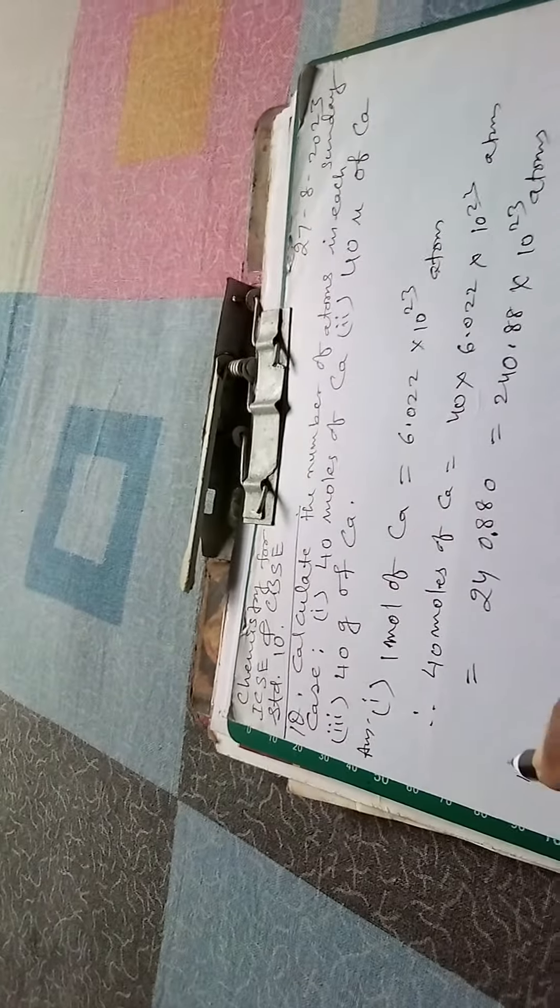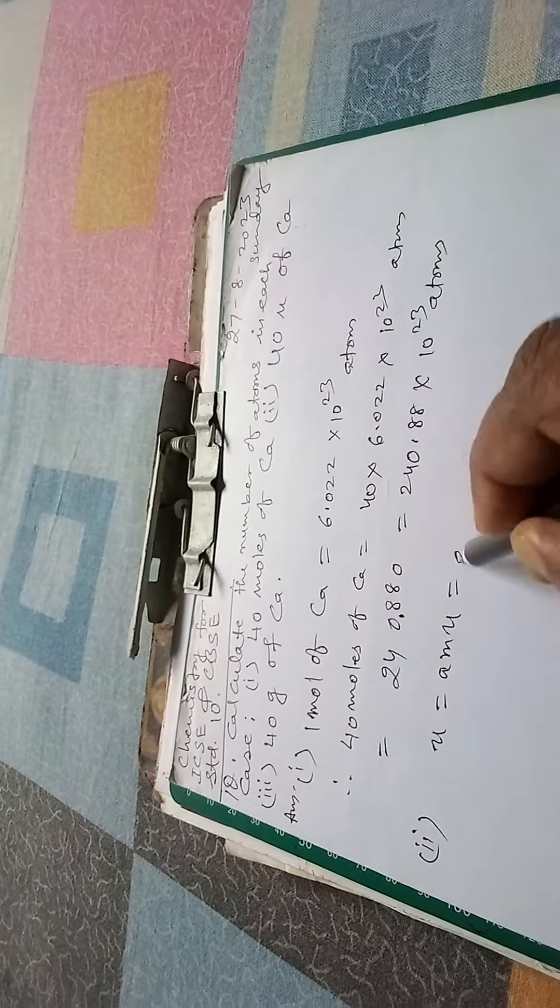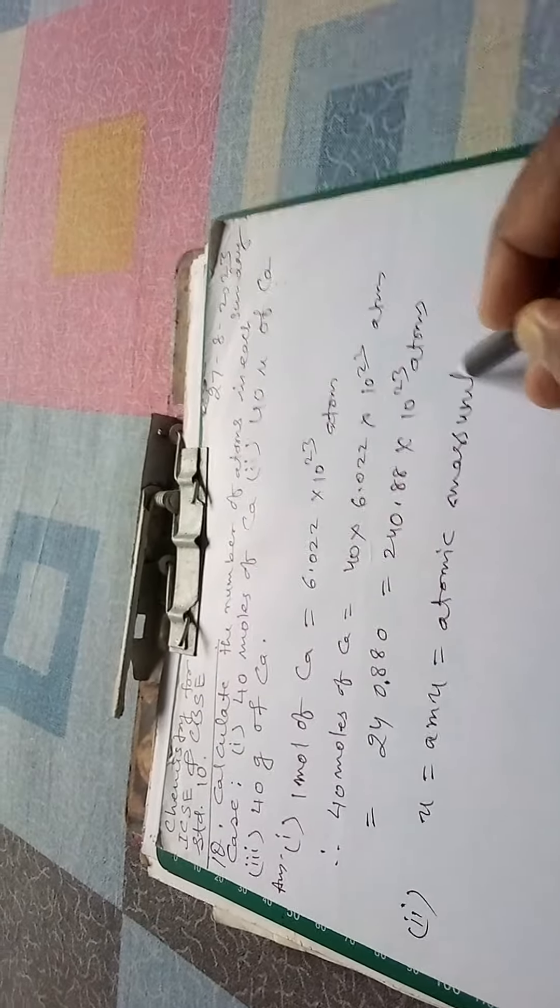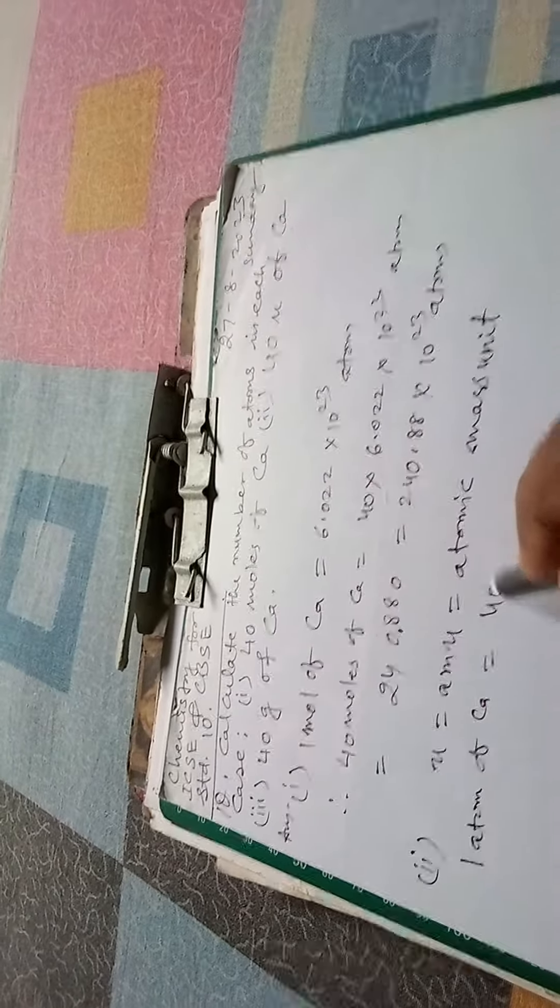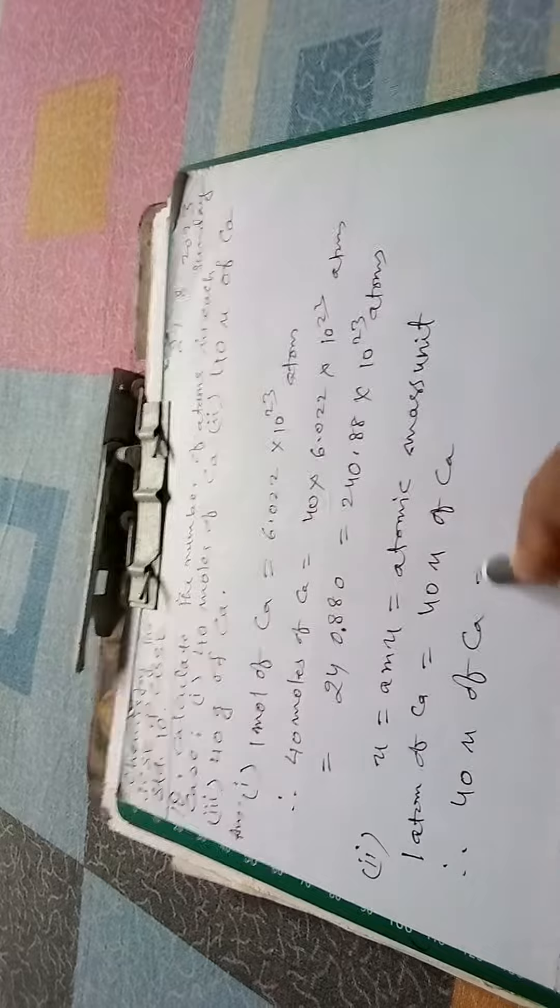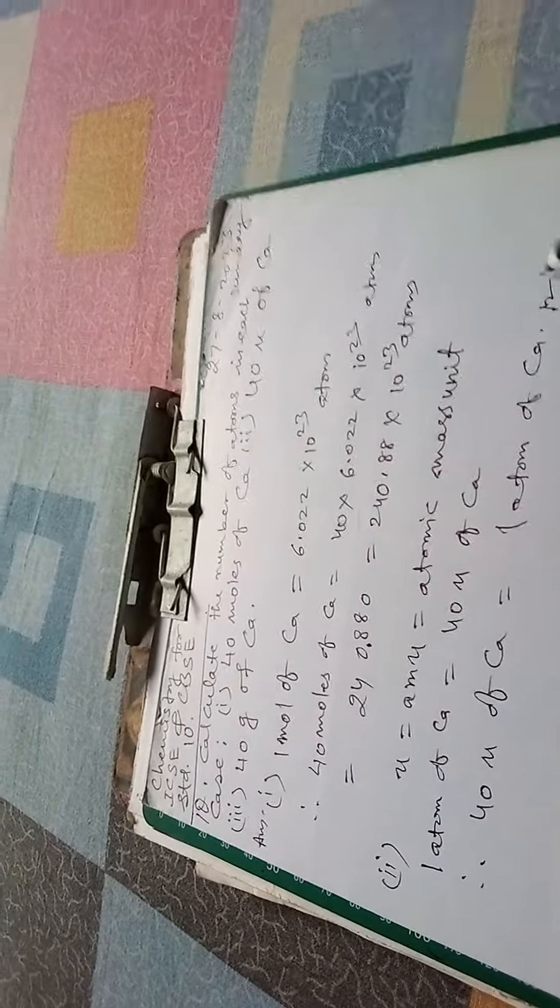Now come to second number, 40 U of calcium. U means AMU and AMU means atomic mass unit. So you know that one atom of calcium is equals to 40 U of calcium, and therefore 40 U of calcium is equals to 1 atom of calcium. This is the answer for this.